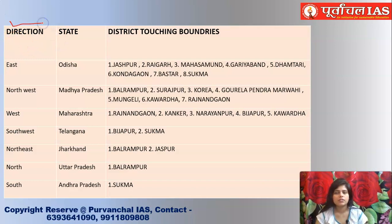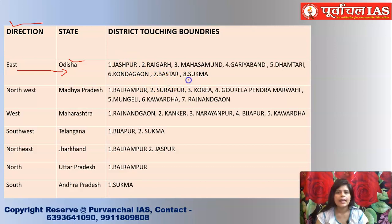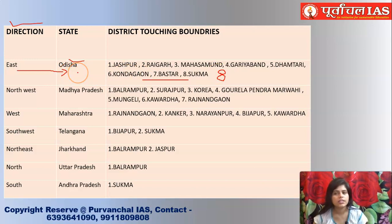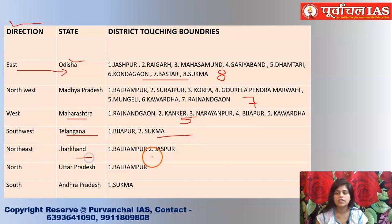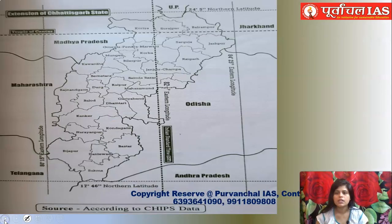Looking at the tabular summary of boundary-sharing by direction: to the east, Chhattisgarh shares the largest boundary with Odisha — almost eight districts touch Odisha. To the northwest, it shares with Madhya Pradesh (seven districts) — quite naturally, since Chhattisgarh was carved out of MP. To the west is Maharashtra with five districts, to the southwest is Telangana with two districts, to the northeast is Jharkhand with two districts, to the north is Uttar Pradesh with one district, and to the south is Andhra Pradesh with one district.